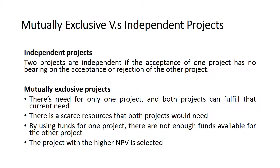With mutually exclusive projects, there is a need for only one project and both projects can fulfill that need — we're talking about the same type of project but with different options. For example, a factory wants to buy sewing machines and is considering options from different companies. Another reason projects are mutually exclusive is scarce resources: a project might need a piece of land and only one piece is available, or the budget is limited and funds used for one project leave none for the other.